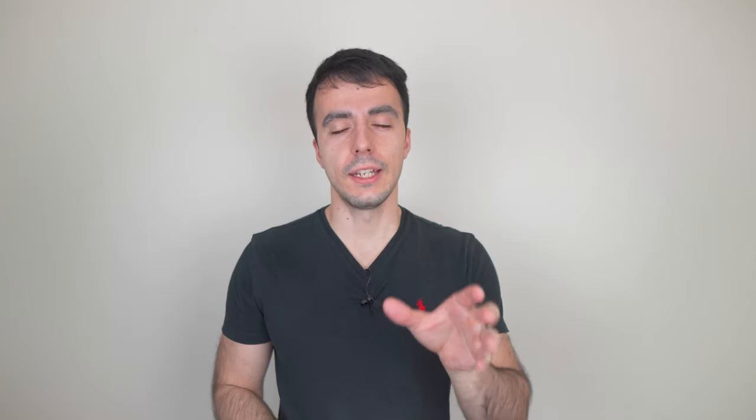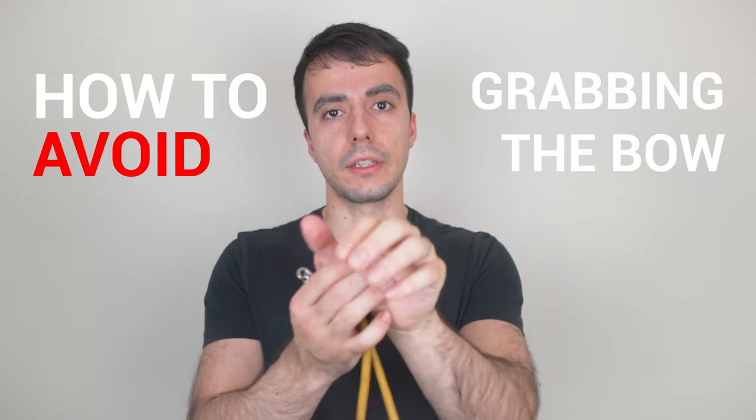The first thing is how to avoid grabbing the bow. This is really key and the essential thing here is to practice with a finger sling. The first thing you want is a finger sling, a piece of rope or string that allows your bow to jump out of your hand and not fall to the floor when you don't grab the bow.